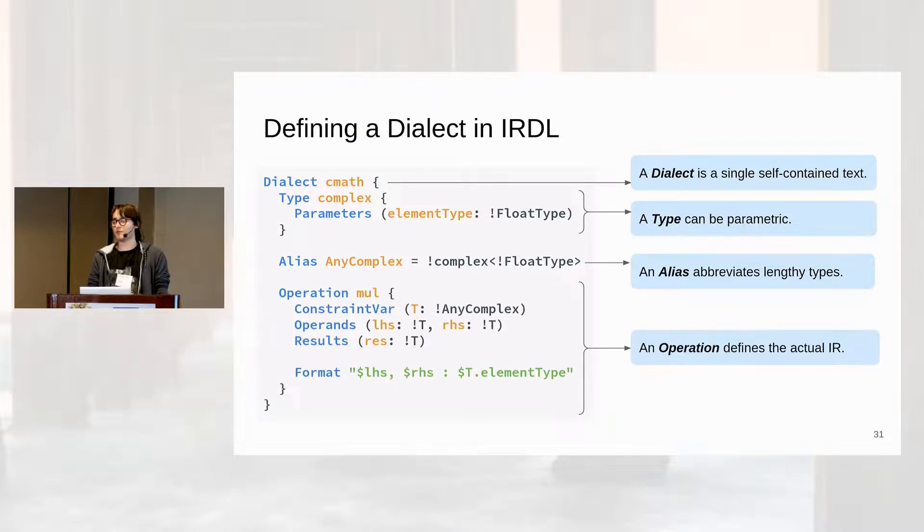And finally, we can define a multiplication operation to multiply two complex numbers. So this one is a bit more complex. We define essentially two operands, LHS and RHS, which are both type T, which I'll go into a bit later. And then we define a result that also has this type T. This type T comes from what's called a constraint variable, which essentially says T needs to be in any complex and also all of the uses of T need to be equal.